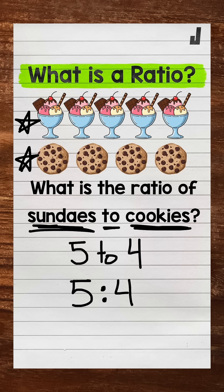And then lastly, we can write ratios in fractional form — five sundaes over four cookies. And those are the three ways we can write out ratios.